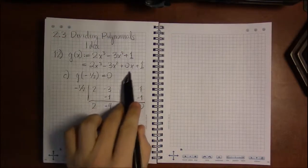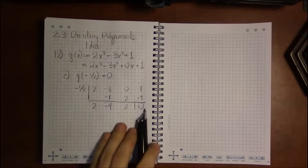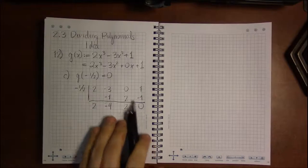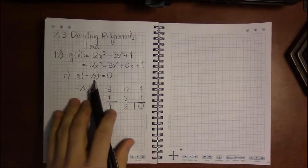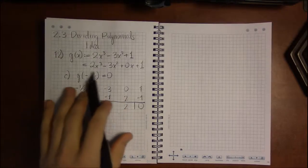And in part c we found that g of minus 1 half was 0, and we did that by walking through the synthetic division required and getting a 0 remainder, which told us that g of minus 1 half is 0, because whatever the remainder is, that's what this equals.